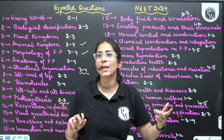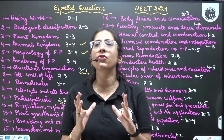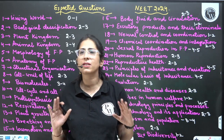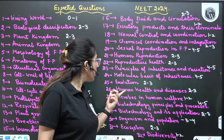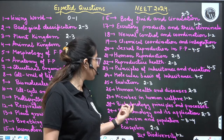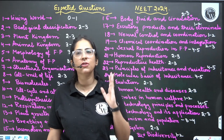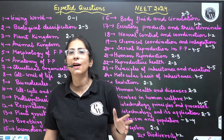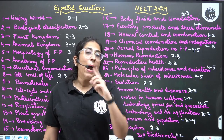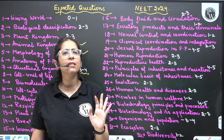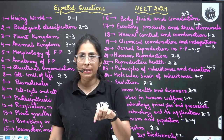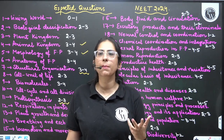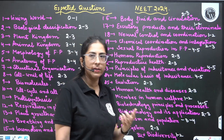Principles of Inheritance and Variation: 4 to 5 questions. Molecular Basis of Inheritance is also very important — together these chapters can give 5 questions, so please do not skip them. Evolution: 2 to 3 questions. Human Health and Diseases: 2 to 3 questions. Microbes and Human Welfare: 1 to 2 questions. Biotechnology: Principles and Processes is every year the examiner's favourite — 4 to 5 questions. Biotechnology and Its Applications is interrelated to it, so expect 2 to 3 questions from that as well.